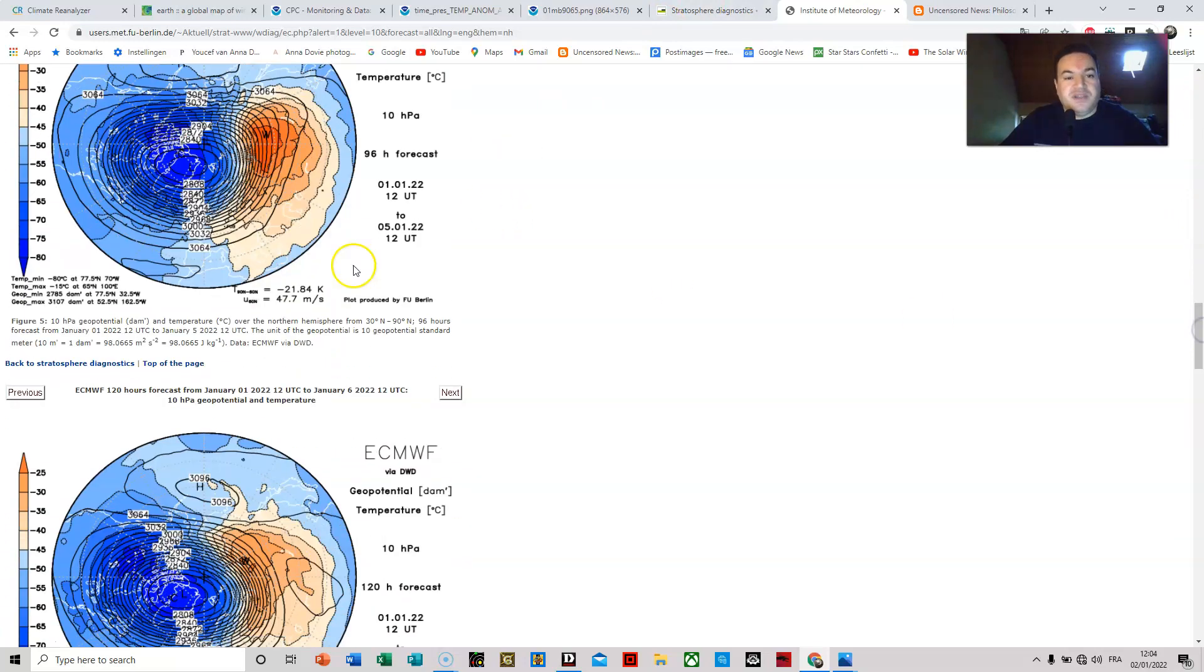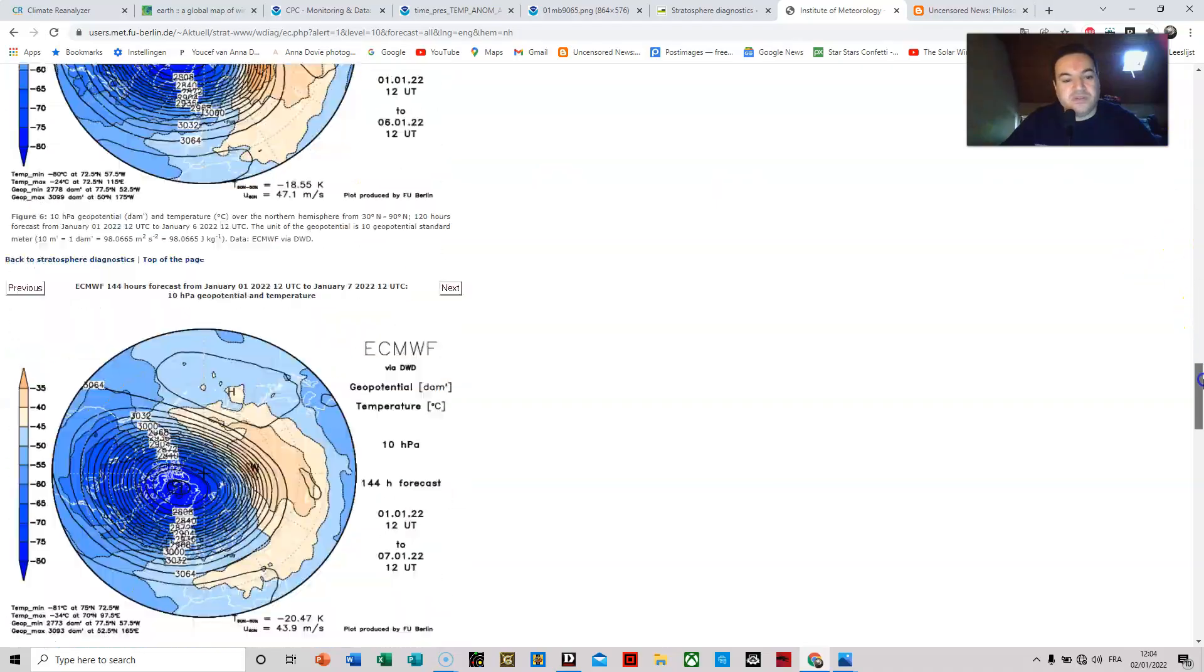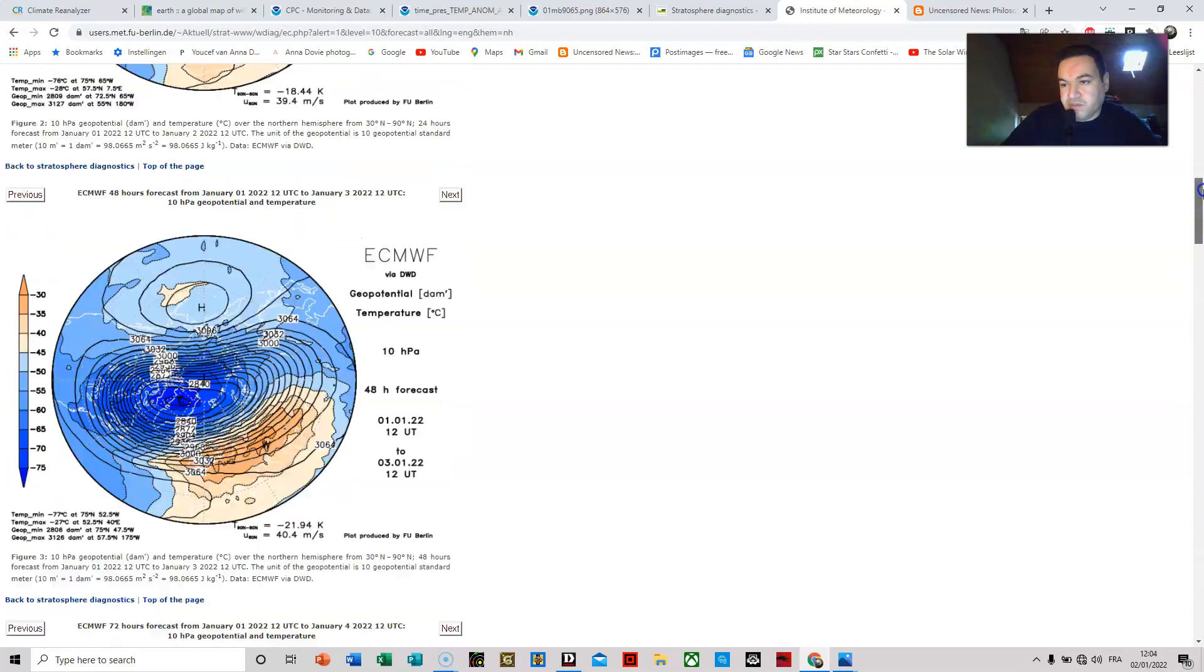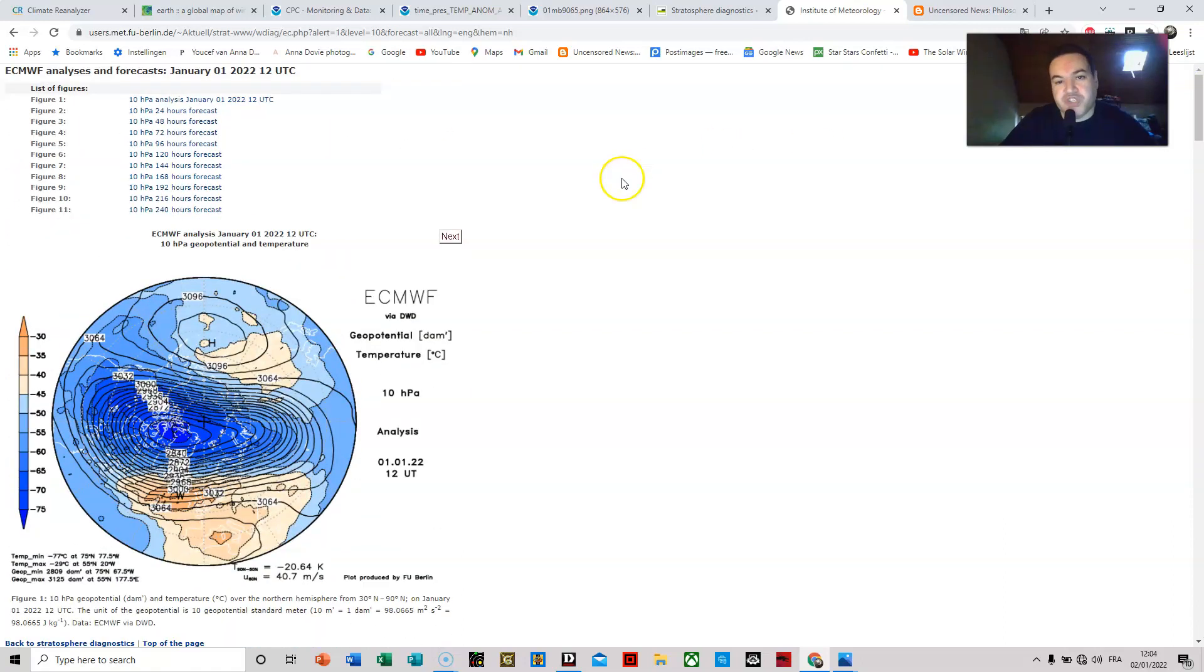So now you can see that it's elongated in this position, but I believe this will change. There is a little bit of warming forecasted. This is normal for this period of the year, but nothing really major. But do keep in mind this is only a forecast. This can change completely. We will see.